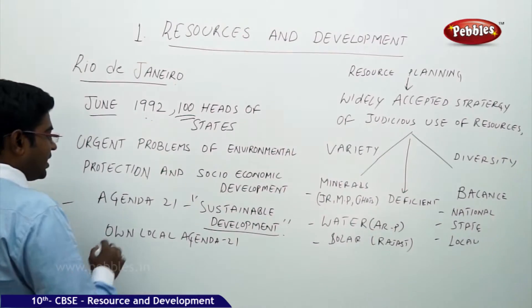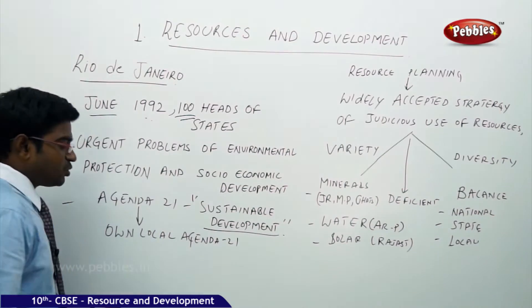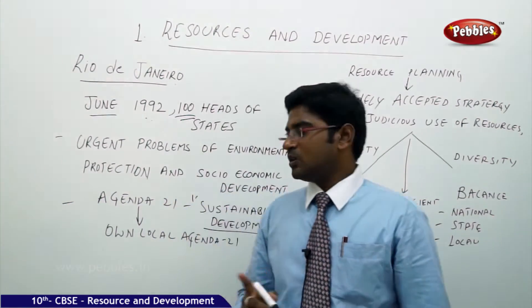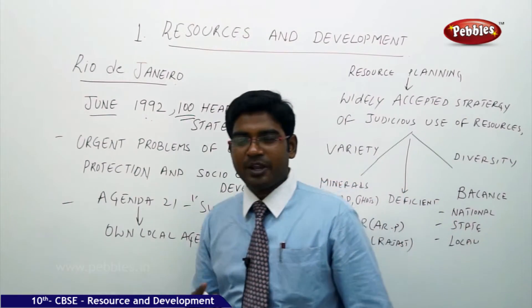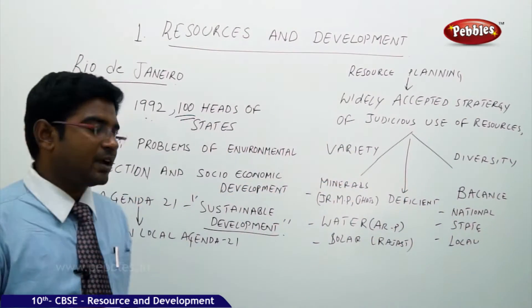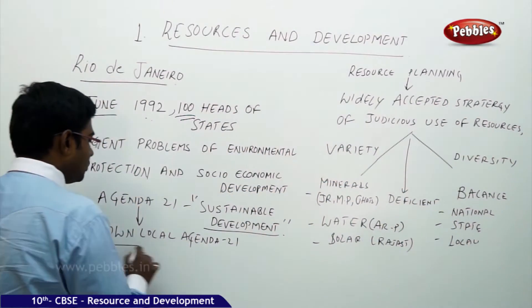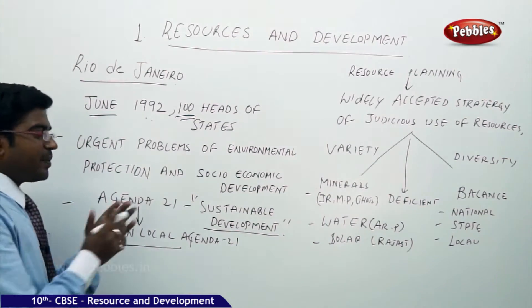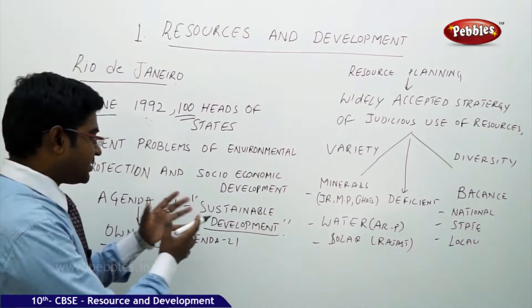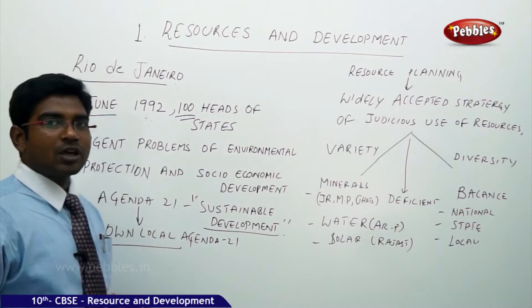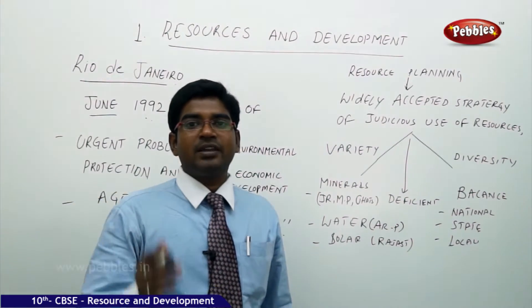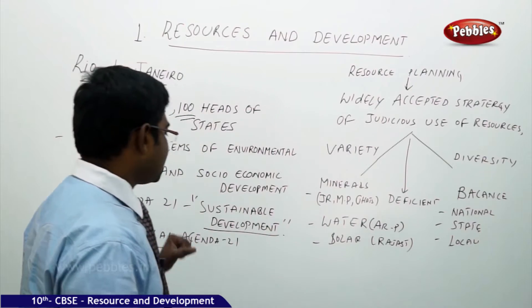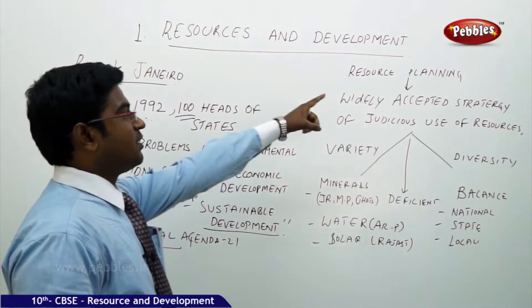Agenda 21 also states that every nation should have its own local Agenda 21. Along with sustainable development, it clearly claims that we should have our own local Agenda 21 — meaning sustainable development on a larger scale, and at the local level, every country should plan its own sustainable development.